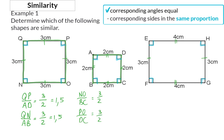We can now make the conclusion that shape QNOP is similar to ABCD, because we've just seen that all the corresponding angles are equal and the corresponding sides are in the same proportion.